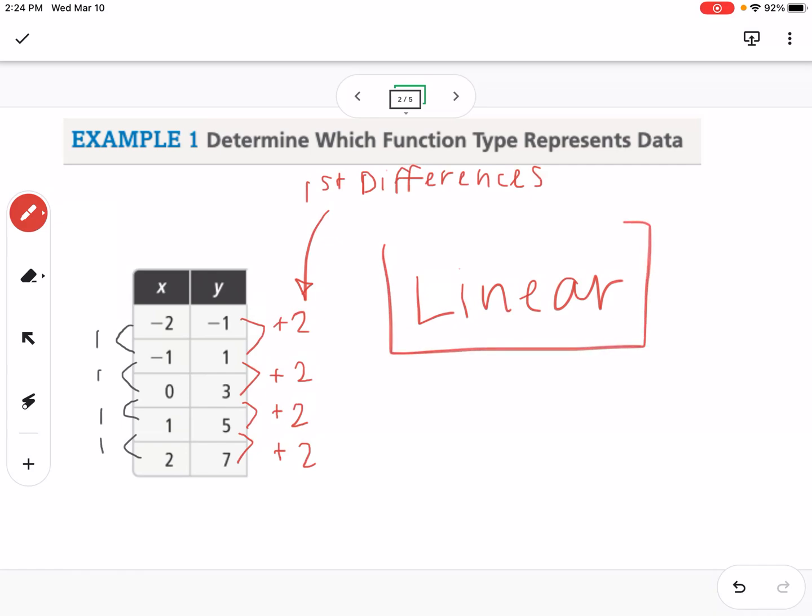So the first thing you're going to check for is you're going to look at the y's, and you're going to figure out if you're going up or down by a constant value each time. So if you are, then we call it a linear function.